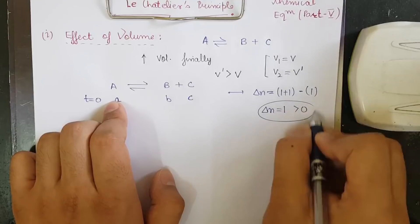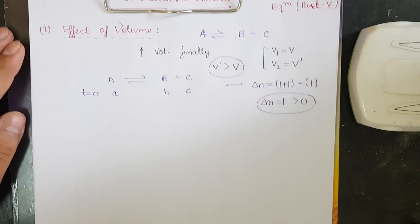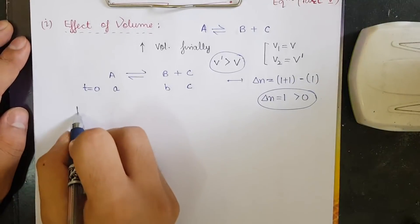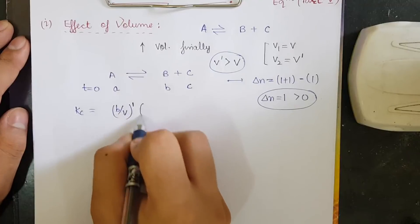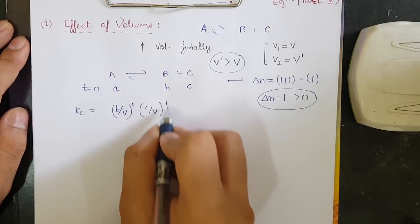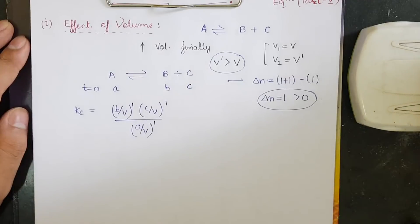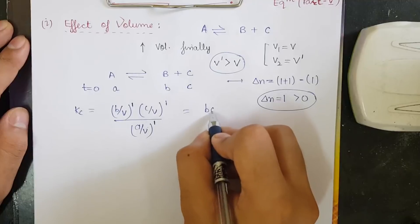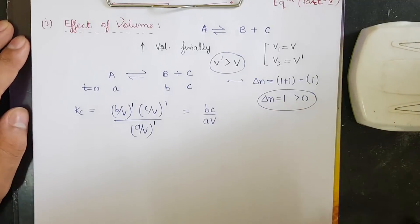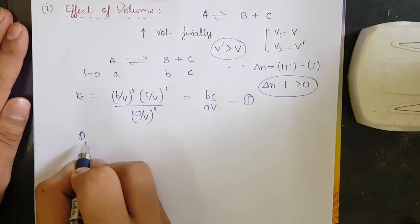With delta n > 0 confirmed, we calculate Kc. Kc = (B/V)¹ × (C/V)¹ / (A/V)¹. Cancelling one V, we get Kc = BC / (A·V). Let this be equation number one.